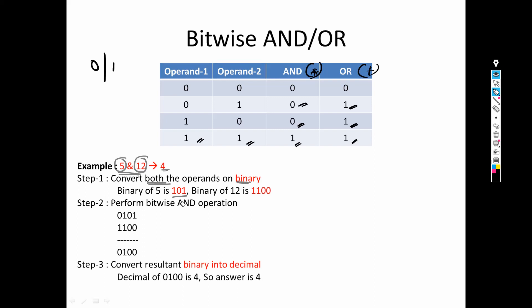If you are not comfortable with this conversion, please go through that video first. So binary of 5 is 101 and binary of 12 is 1100. Notice that 5 has three digits and 12 has four digits — we need to make them equal because the bitwise AND operation is performed on each bit. So we append a zero on the left of 101 to make them equal. If there is a non-similarity in the number of bits, we make it similar by appending zeros on the left side.